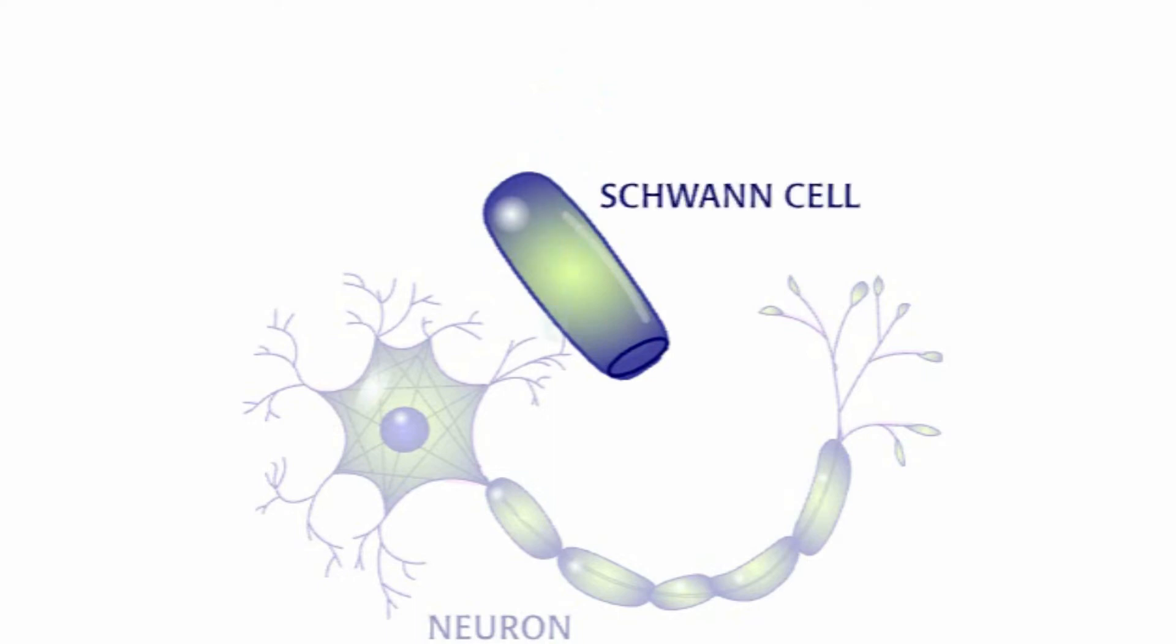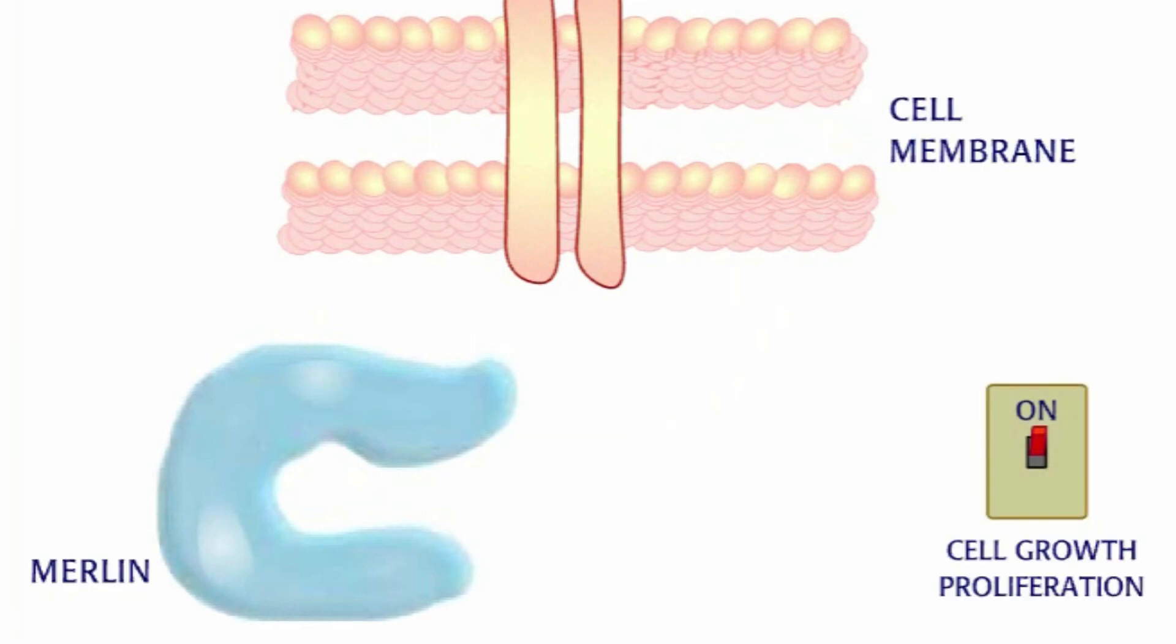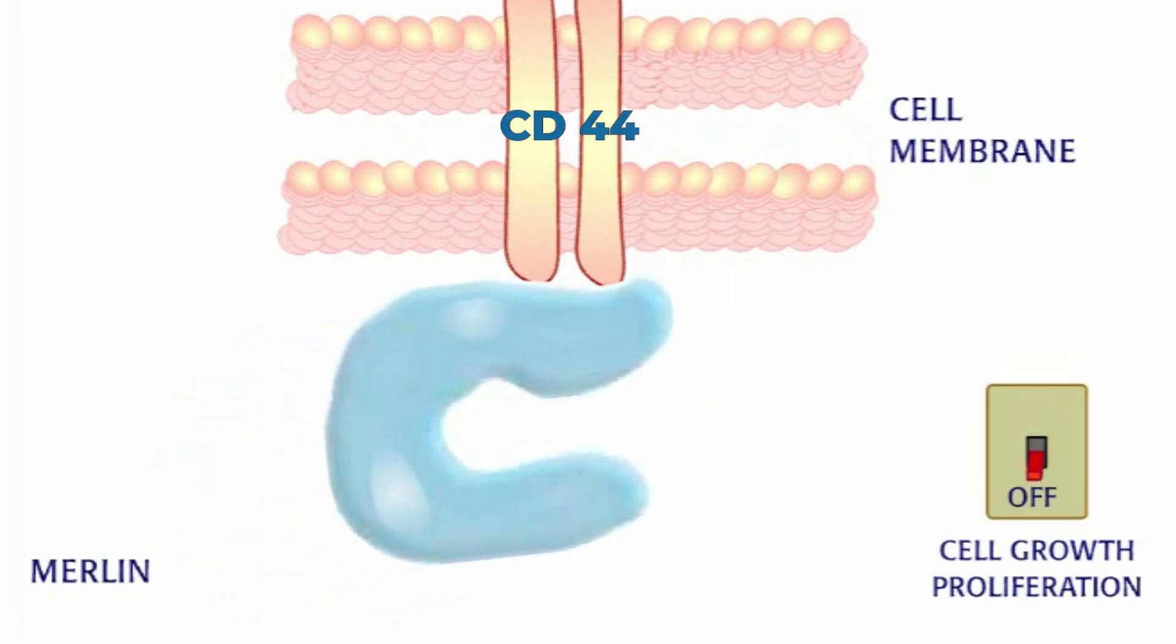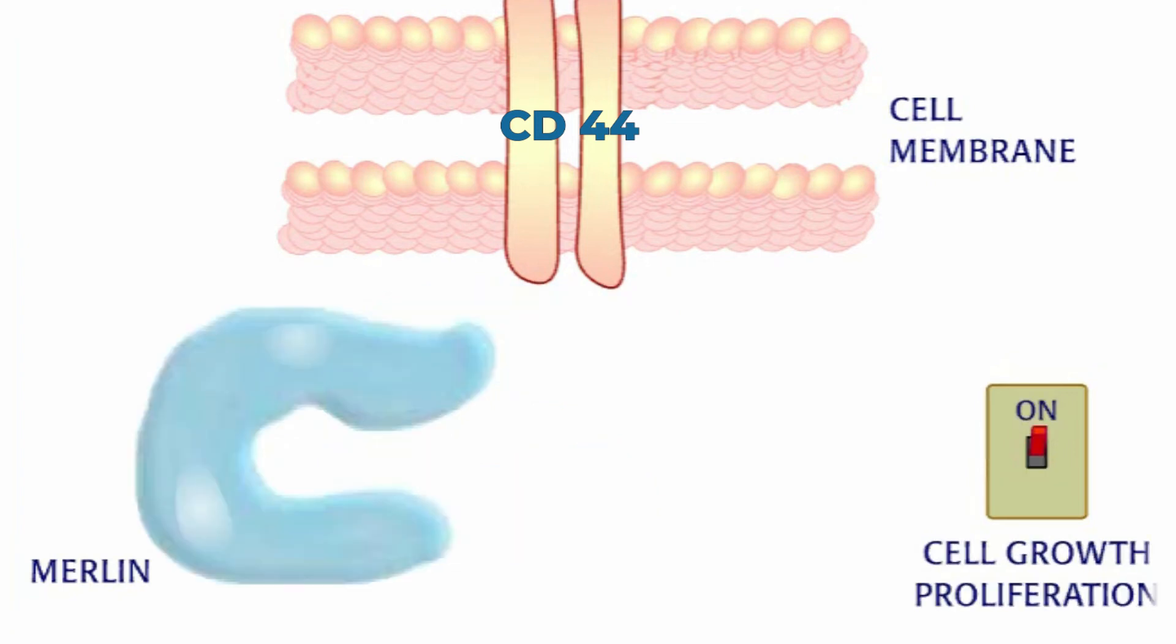Merlin can bind to a receptor protein called CD44, which is found in the cell membrane. This binding suppresses cell growth.